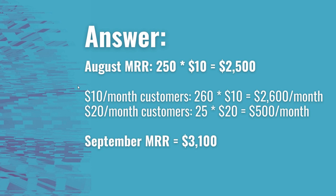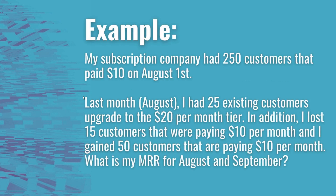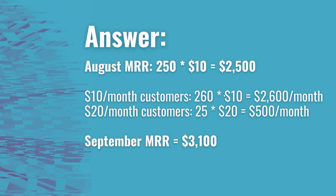To calculate September MRR, start with 250 customers in the $10 tier. 25 upgraded to $20, leaving 225 in the $10 tier. Add 50 new customers to get 275, then subtract 15 lost customers to get 260. So I have 260 customers at $10 (that's $2,600) and 25 customers at $20 (that's $500). September MRR is $2,600 plus $500, which equals $3,100.